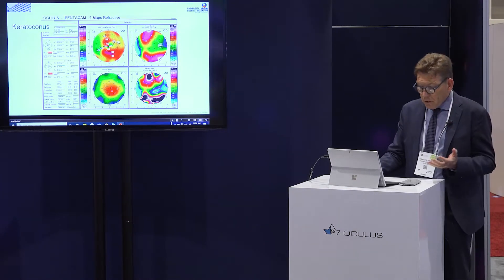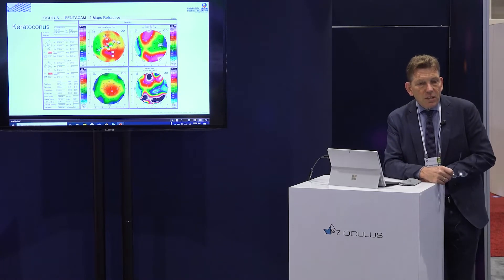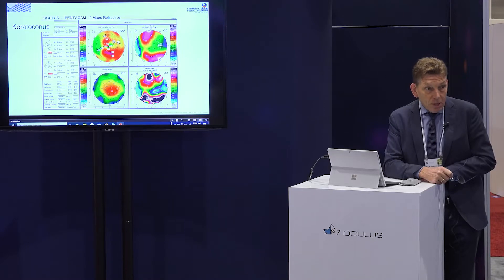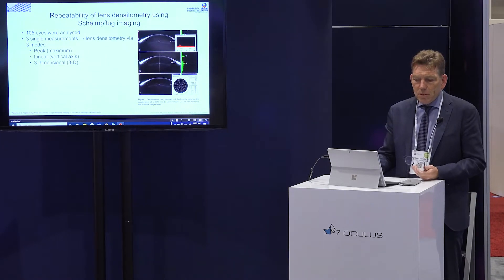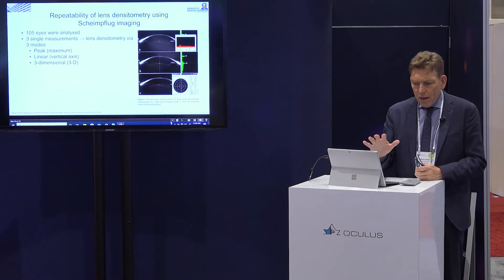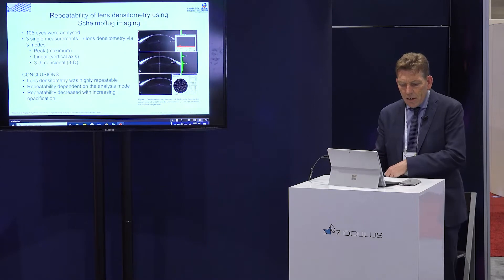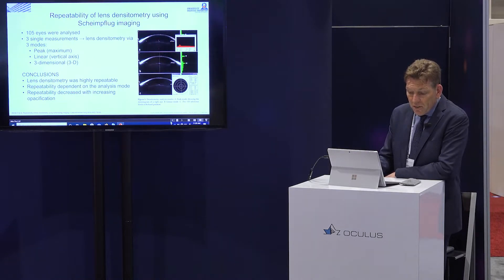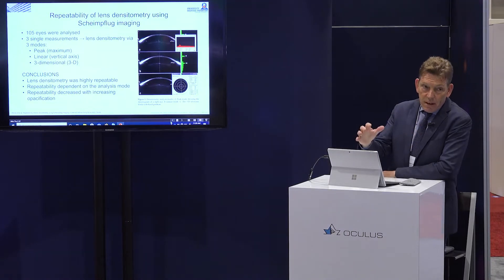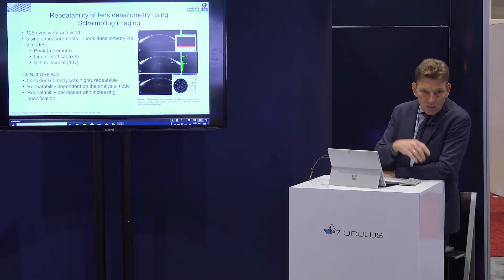Keratoconus patients often come asking whether they can have refractive surgery for three diopters of myopia, and then you see keratoconus — so you cannot do it. For lens densitometry, we did studies on repeatability using 105 eyes. We found that lens densitometry was highly repeatable, repeatability depended on the analysis mode, and repeatability decreased with increasing opacification — the higher the cataract, the less repeatable. But the key goal is figuring out whether there is opacification at all.